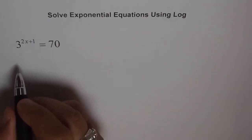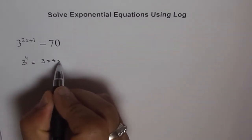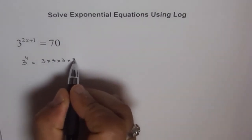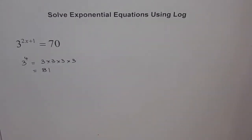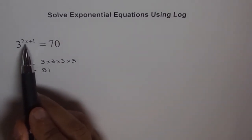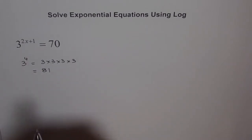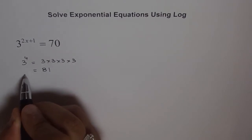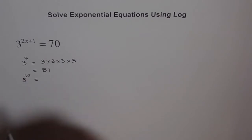3 to the power of 4 is 3 times 3 times 3 times 3, which is 9 times 9, which is 81. Now, 70 is of course less than 81, so this exponent here, 2x plus 1, should be less than 4. So now we can try to find what 3 to the power of 3.5 is. Getting into those fractions and exponents is very difficult to do manually.